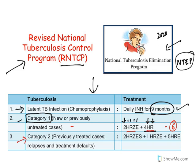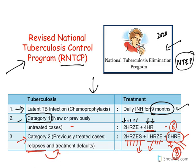Category 2 applies to relapsed TB or reactivation of latent TB. Treatment runs for eight months: the first two months include isoniazid, rifampin, pyrazinamide, ethambutol, and streptomycin; the next one month uses isoniazid, rifampin, pyrazinamide, and ethambutol; and the final five months use isoniazid, rifampin, and ethambutol. This is what is followed under RNTCP and NTEP.